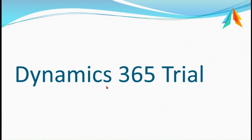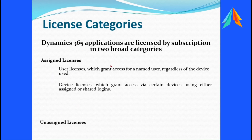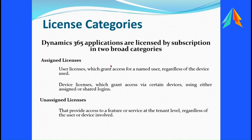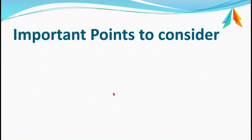Before buying a license, we can use the trial which is free of cost. For all the applications, we have two categories of licenses: assigned licenses and unassigned licenses. Under assigned licenses we have user licenses and device licenses. Under unassigned licenses, we have licenses at the tenant level, which is for marketing and fraud protection.